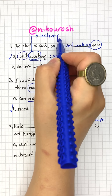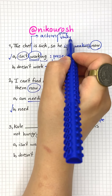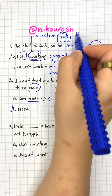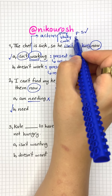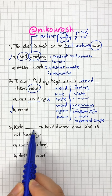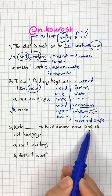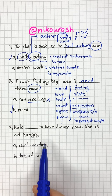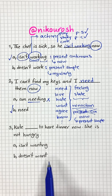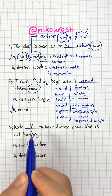In the last question, the main verb is work, which is an action verb like play, study, and cook. We can use action verbs in both present simple and present continuous. Now, Kate blank to have dinner now — she is not hungry. Isn't wanting or doesn't want? Now it's your turn — what is the right answer for this?